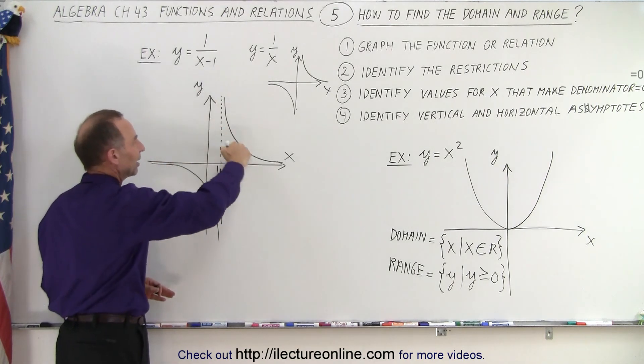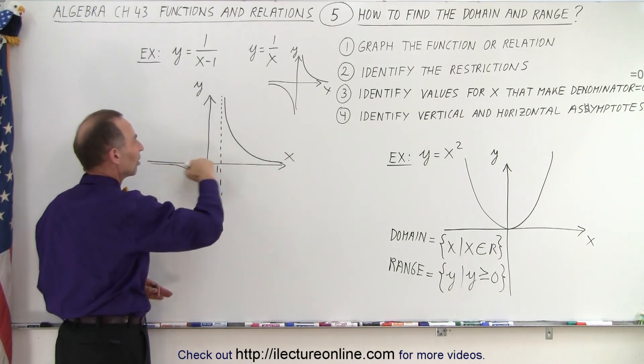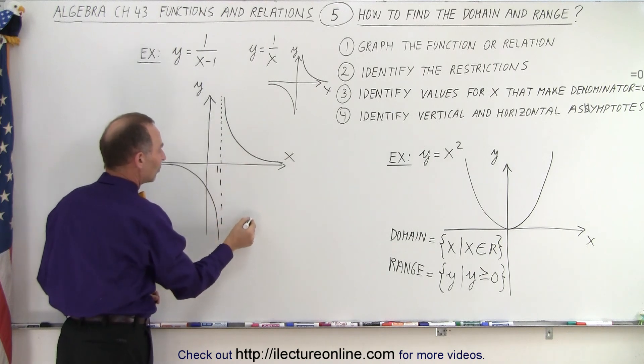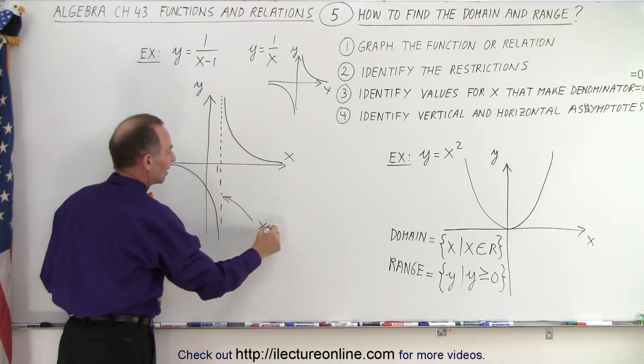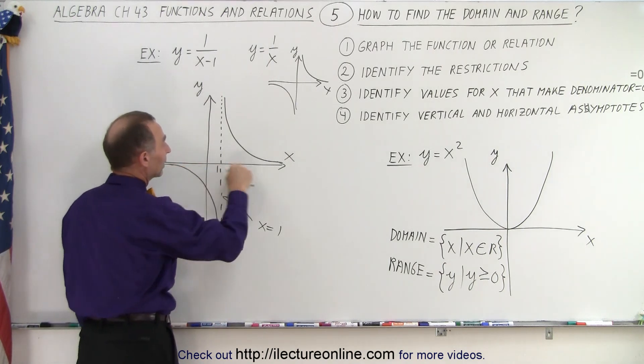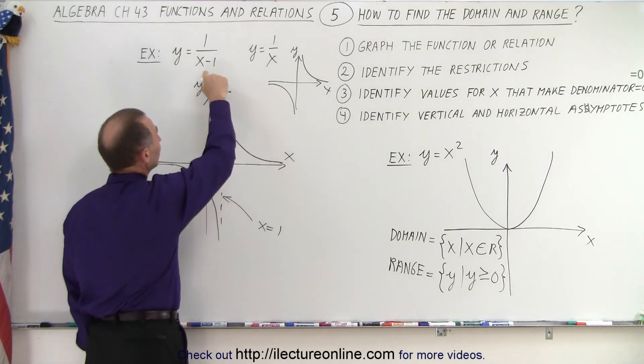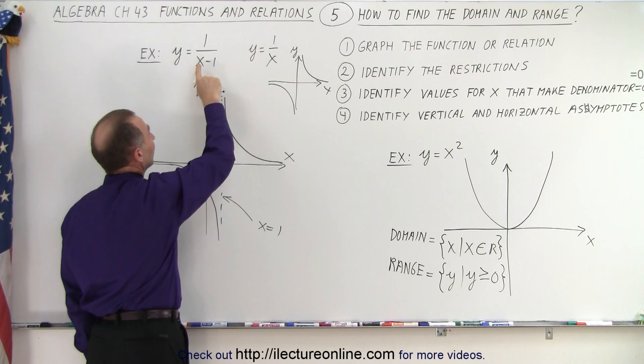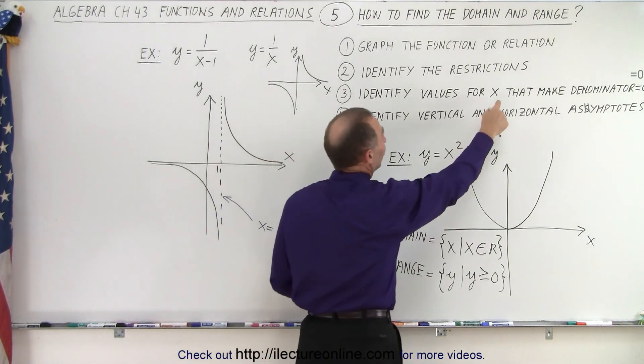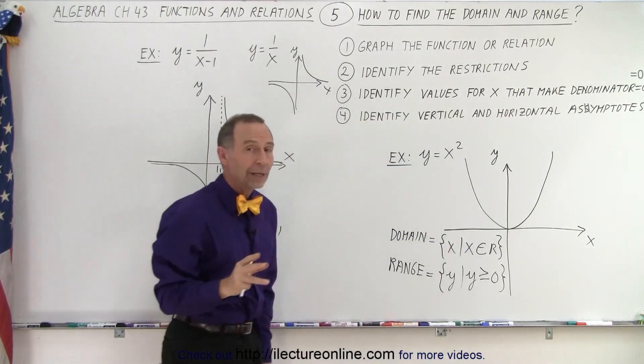So again, you see that it asymptotically reaches the line, the x-axis, but it also asymptotically reaches the vertical line called x equals 1. In other words, x can never equal 1, and y can never equal 0. Now, if you look at the denominator, notice that if x is equal to 1, 1 minus 1 is 0, that gives us a 0 denominator, which means that's a value that we cannot allow in the set.